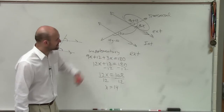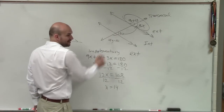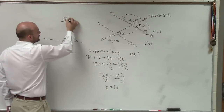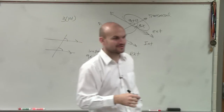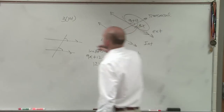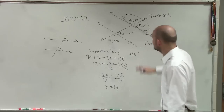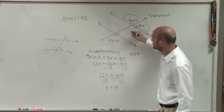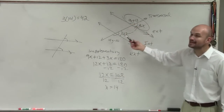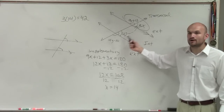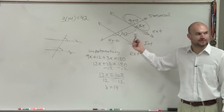Now, ladies and gentlemen, if we know what x is, can I determine what this angle is? 3 times 14 — 3 times 14 is 42. So that angle is equal to 42. And if this angle is equal to 42, what do I know about how these two angles relate to each other?